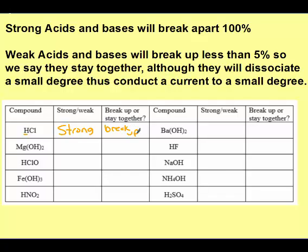Strong acids and strong bases break apart 100%, producing lots of hydrogen and hydroxide ions. The next one: magnesium hydroxide ends in OH, so it's a base. But magnesium was not on our list of strong bases, so it is a weak base. Therefore, it stays together.